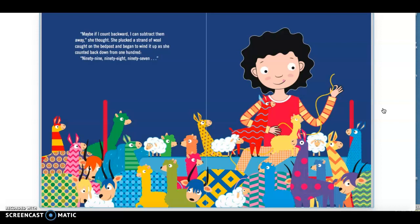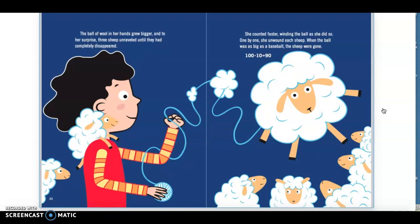She couldn't keep one hundred animals in her room. Maybe if I count backward, I can subtract them away, she thought. She plucked a strand of wool caught on the bedposts and began to wind it up as she counted back from one hundred. Ninety-nine, ninety-eight, ninety-seven. The ball of wool in her hands grew bigger, and to her surprise, three sheep unraveled until they had completely disappeared. She counted faster, winding the ball as she did so.